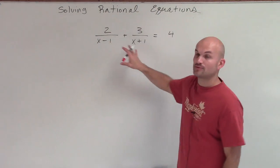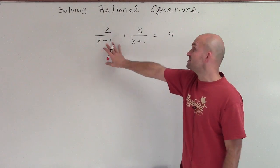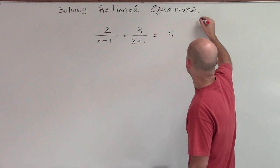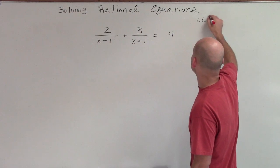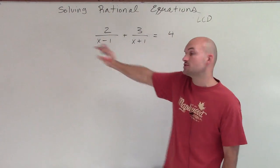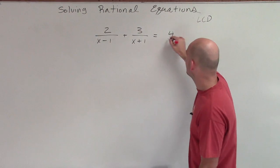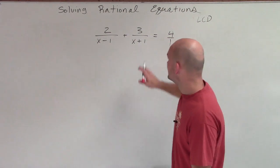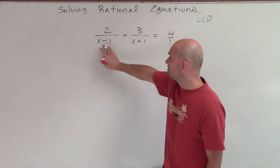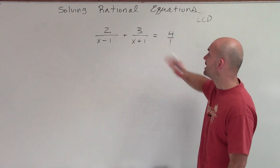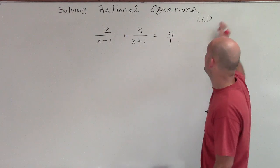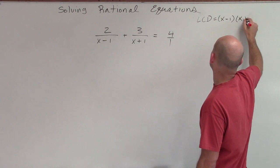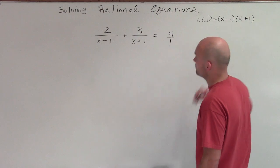However, a lot of times with rational equations, we just want to get rid of our denominator. So what we like to do is determine what our least common denominator is of every single one of our terms. Now this 4 has a denominator of 1. So we can see that the least common denominator between x minus 1, x plus 1, and 1 is going to be x minus 1 times x plus 1.